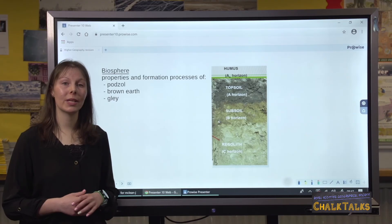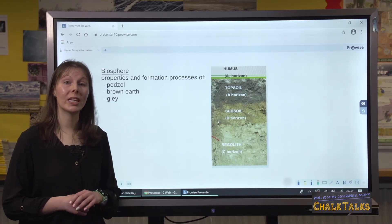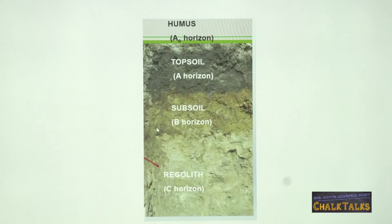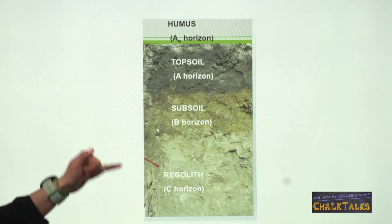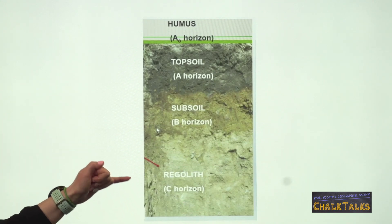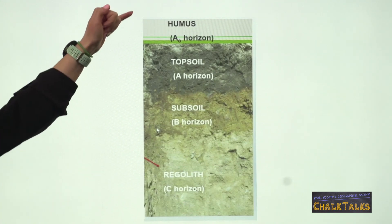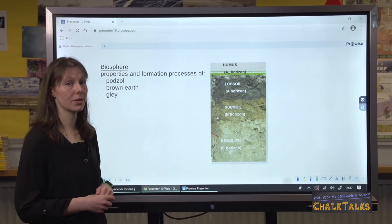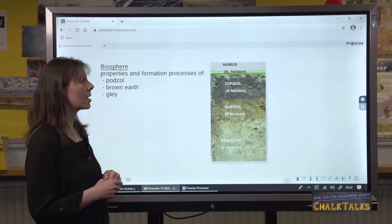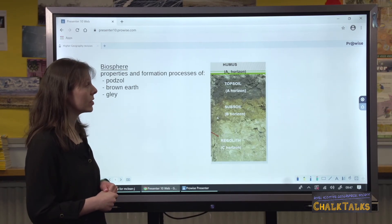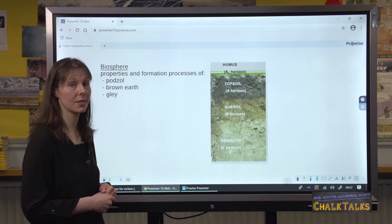In order to explain how soils work, we need to look at how they're made up. If we look at this diagram, it's important to know that from top to bottom we can look at it as a cross-section. In geography we refer to this as a soil profile, and within the soil profile we have different layers. In geography we call them horizons, and each horizon is very distinctive in what it contains.